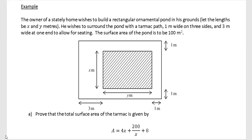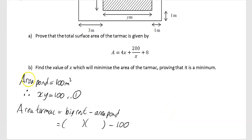This last example says: the owner of a stately home wishes to build a rectangular ornamental pond. Let the lengths be x and y metres. He wishes to surround the pond with a tarmac path one metre wide on three sides and three metres wide on one end to allow for seating. The surface area of the pond is to be 100 m². The area of the pond gives us x times y equals 100 — equation 1.